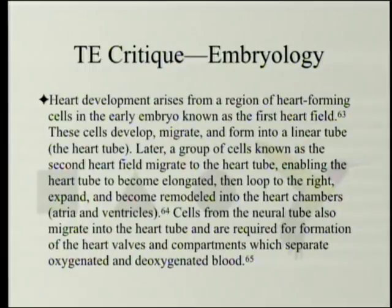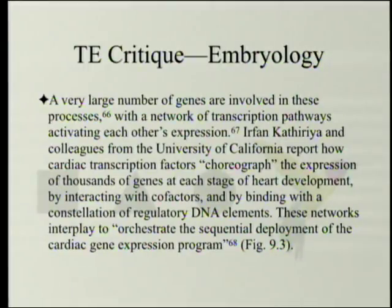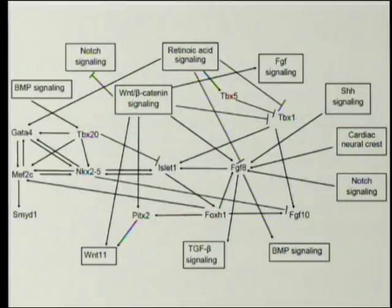Coordinated parts from two different tissue layers — mesothelium and epithelium — work together. A very large number of genes are involved, with a network of transcription pathways activating each other's expression. Researchers from the University of California report how cardiac transcription factors choreograph the expression of thousands of genes at each stage of heart development by interacting with cofactors and binding with a constellation of regulatory DNA elements. These networks interplay to orchestrate the sequential deployment of the cardiac gene expression program — as shown in Figure 9.3, a simplified diagram given that thousands of genes are involved.